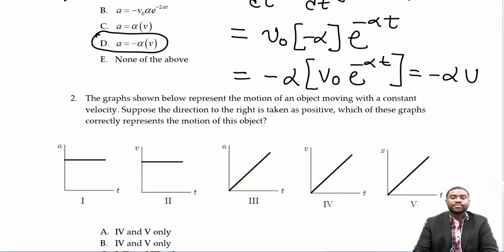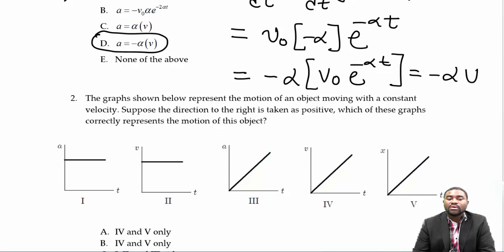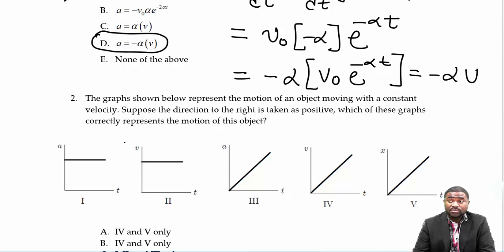The next question: the graph below represents the motion of an object moving with a constant velocity. Suppose the direction to the right is taken as positive. Which of these graphs correctly represents the motion of this object?